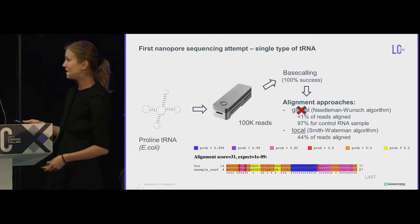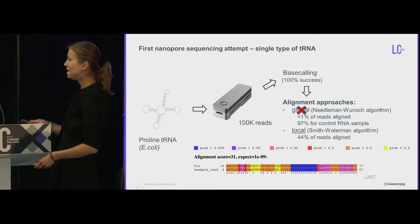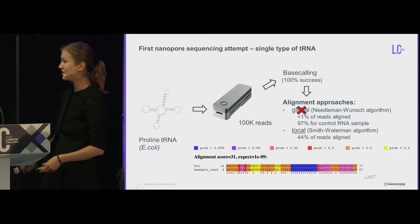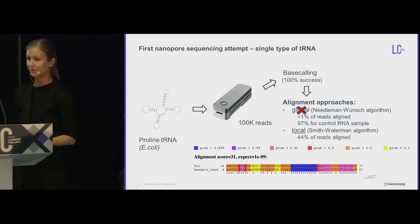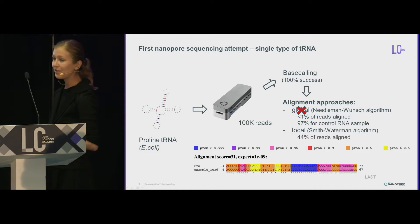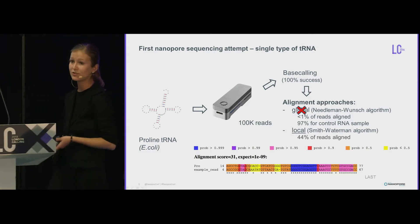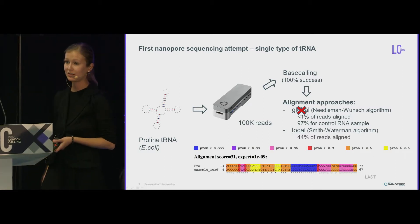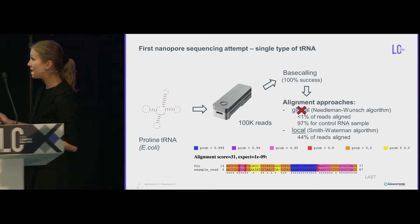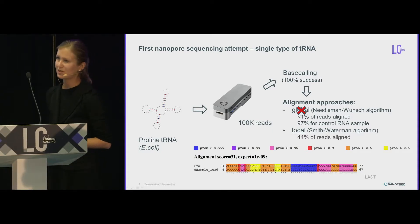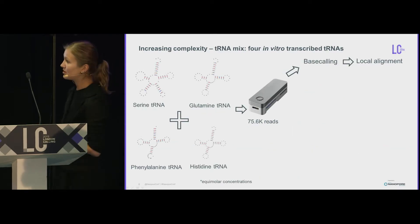To give an impression of the difference: with local alignment, you're not trying to align as much as possible, but you align several regions even if there are gaps between them. If you have a higher error rate it gives a higher probability that you will still get sequences aligned. That's why we went for that approach.